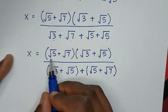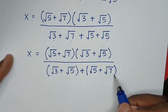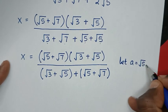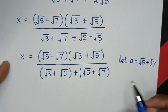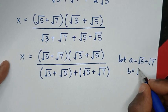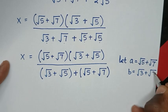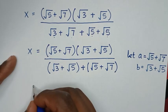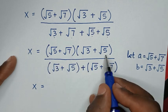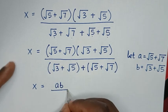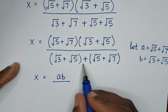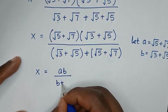Now from here, you can see that (√5 + √7) is common, so we let a = √5 + √7. Also, (√3 + √5) is common, so we let b = √3 + √5. So x = ab over (b + a), which is ab over (a + b).